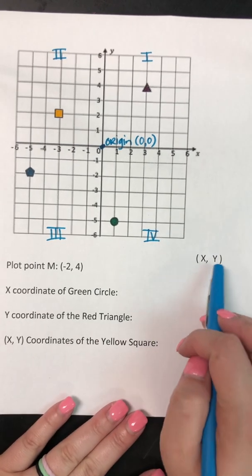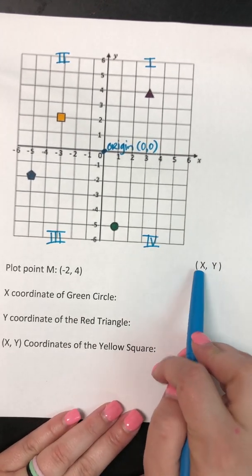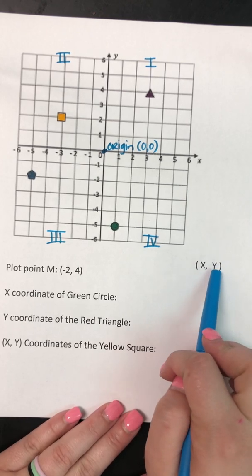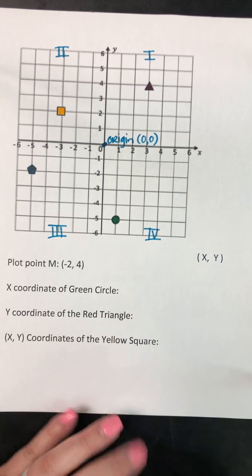The first thing I want to talk about is a coordinate is an x, y. So x is the first number, y is the second number. So this is your x coordinate, this is your y coordinate.